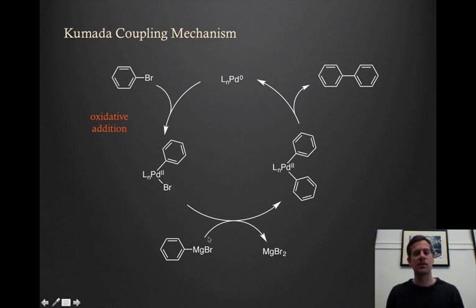The next thing that happens is that we're going to transmetallate. So we're going to do a transmetallation in this case with our Grignard reagent. So transmetallate, this phenyl is going to become attached to the palladium, and the bromide becomes attached to the magnesium. So we get magnesium bromide as a byproduct, and now we've got this diphenyl palladium two.